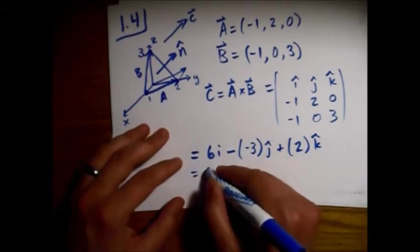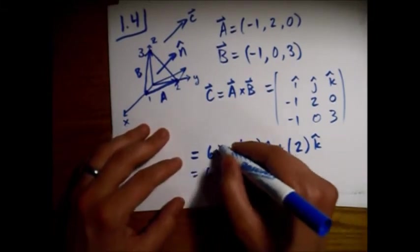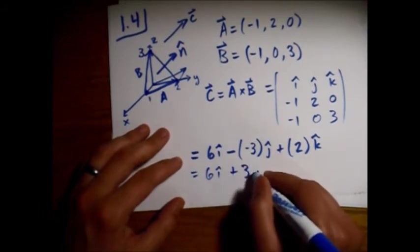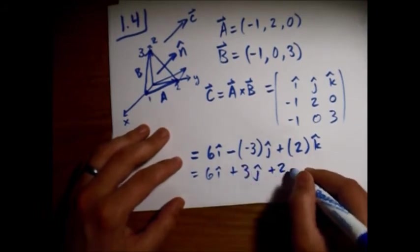So yeah, we just have 6i—put the hat on the i—plus 3j plus 2k.